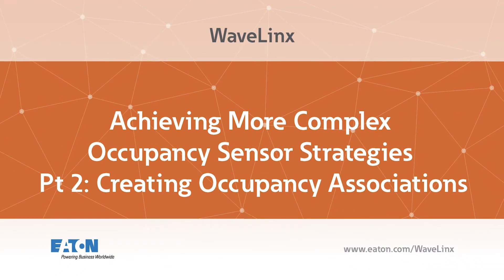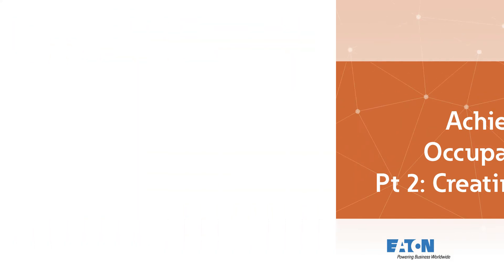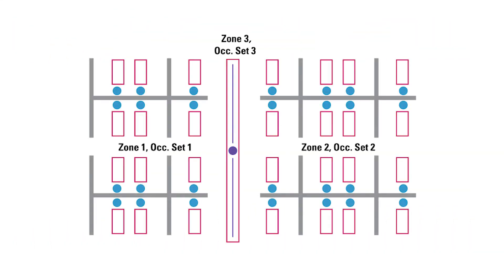This video showcases methods of achieving more complex occupancy sensor strategies using the Wavelinks mobile application. In the last video of the series, a sample application was programmed with three occupancy sets to allow for independent control of the area's three zones by their respective sensors.